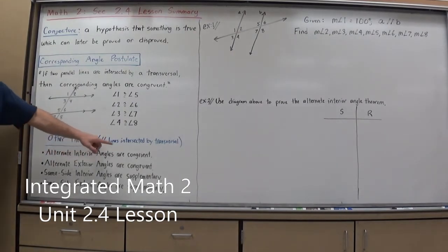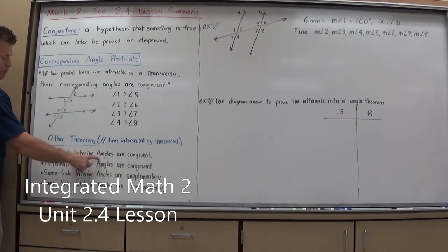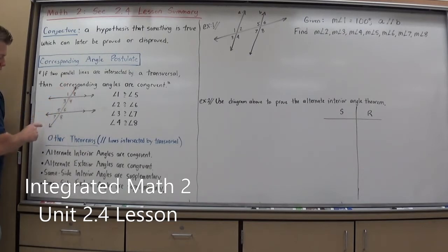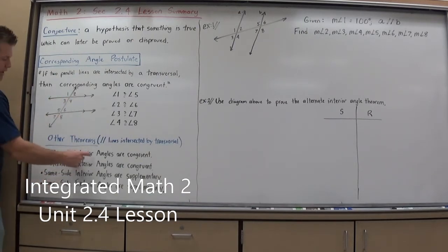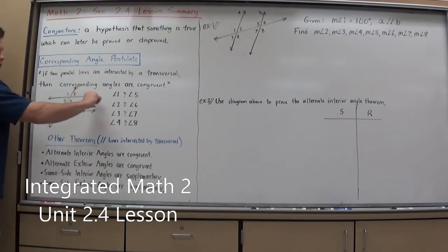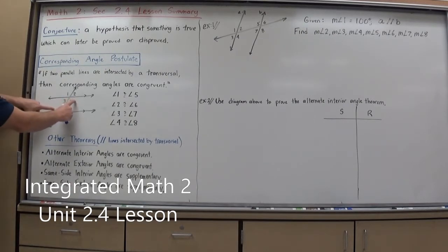Alternate interior angles are congruent if the lines are parallel. When they say alternate, they mean on opposite sides of the transversal. When they say same side, the angles have to be on the same side of the transversal. When they say interior, the angles are between the parallel lines. When they say exterior, the angles are on the outside of the parallel lines. So alternate interior angles are congruent: angles 4 and 5, and angles 3 and 6.